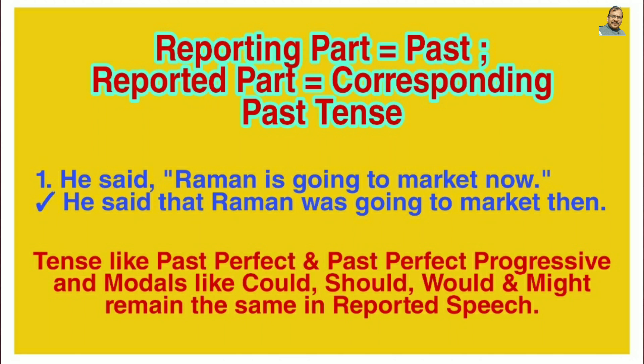If the reporting part verb is in past tense, the reported part verb changes as follows: present simple changes into past simple, present progressive into past progressive, present perfect into past perfect, present perfect progressive into past perfect progressive. For modal verbs: 'will' becomes 'would,' 'shall' becomes 'should,' 'can' becomes 'could,' 'may' becomes 'might.' However, past perfect, past perfect progressive, and modals like 'could,' 'should,' 'would,' and 'might' remain the same even in the reported speech.